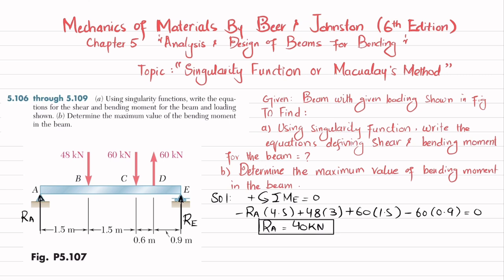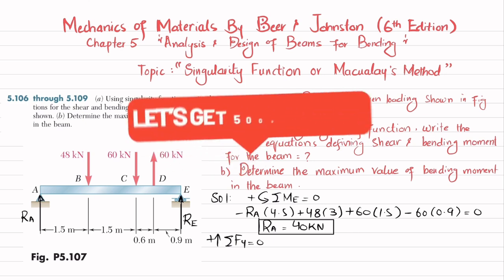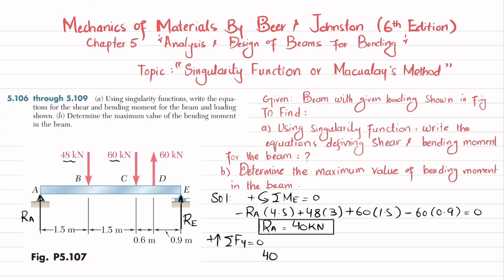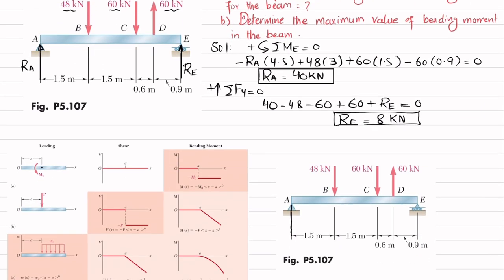Now we find R_E using the second equation of equilibrium: sum of all forces in the y-direction equals zero, with upward forces positive. So: 40 minus 48 minus 60 minus 60 plus R_E equals zero, giving R_E equal to 128 kilonewtons. Wait — solving correctly gives R_E equal to 8 kilonewtons. We now have R_A equals 40 kilonewtons and R_E equals 8 kilonewtons.